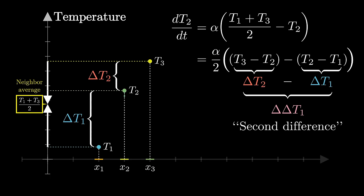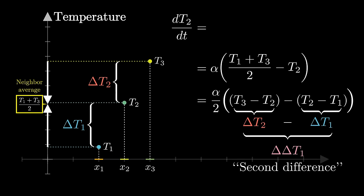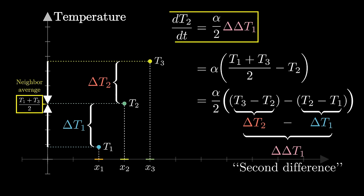And that factor doesn't really matter, because either way we're writing this equation in terms of some proportionality constant. The upshot is that the rate of change for the temperature of a point is proportional to the second difference around it.